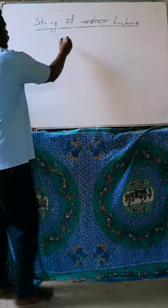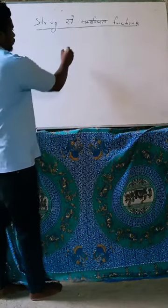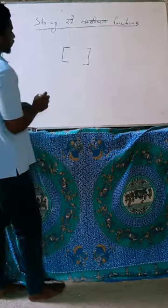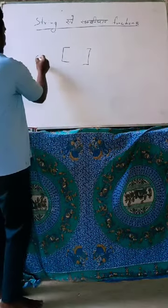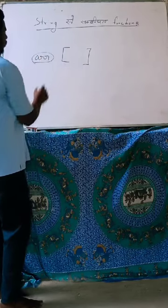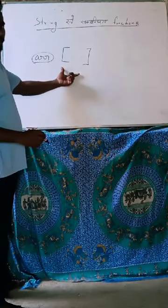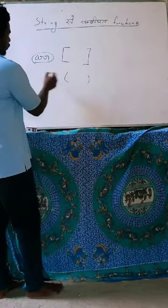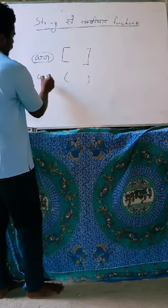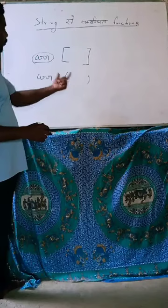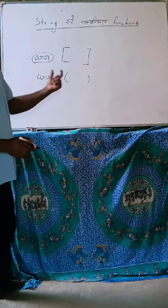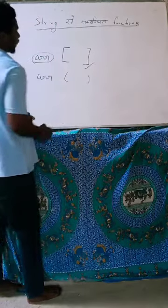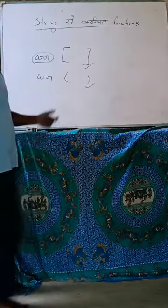First of all, we have two things to do here. If there is a big bracket, whatever name you have written, it's an array. And if there is a small bracket here, whatever name you have written, it's a method. So, a big bracket means array, and a small bracket means a function.